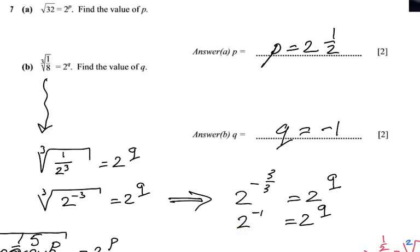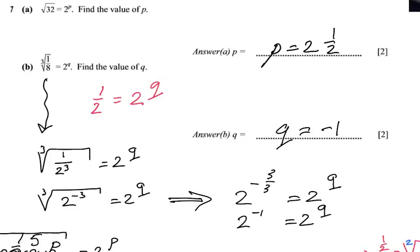So I rewrite 1 over 8 with a base of 2: 1 over 2³ equals 2 to the power minus 3. Then I turn the cube root into a fractional index — as I showed in the previous question — giving minus 3 over 3, which is minus 1. So q equals minus 1. Now for the second method: you could use your calculator. The cube root of 1 over 8 gives you one-half, so you write one-half equals 2 to the power q. And 1 over 2 to the power 1 is the same as 2 to the power minus 1 equals 2 to the power q.